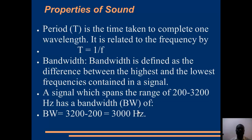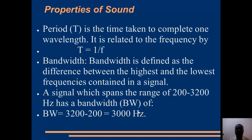Then we have the bandwidth. Bandwidth is defined as the difference between the highest and the lowest frequencies contained in a signal. For instance, a sound wave may consist of several frequencies put together. A signal that spans the range of, say, 200 Hz to about 3,200 Hz has a bandwidth of 3,200 minus 200, giving you 3,000 Hz. Bandwidth takes the difference in frequency between the highest and the lowest frequency ranges within the sound.